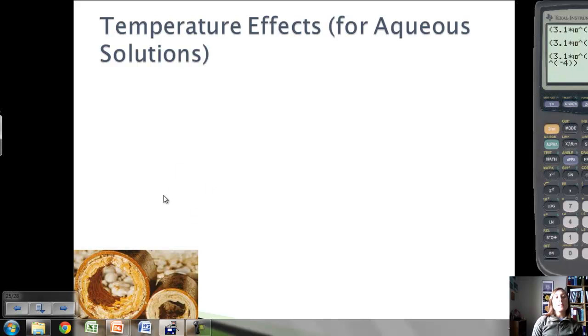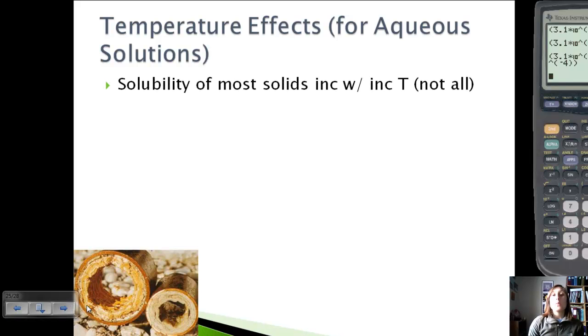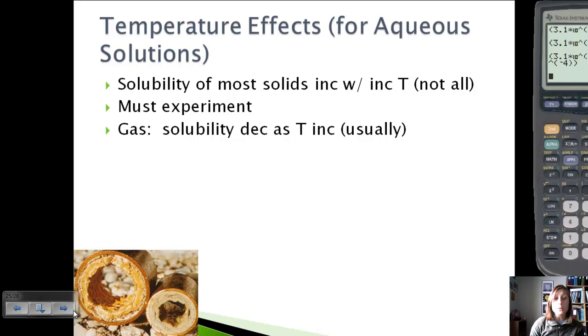Okay, so the last type of effect that's going to affect solubility besides structure and pressure is temperature. With solids, most of the time, solubility will increase with an increase in temperature. But this isn't constant for all solids, and really the only way to tell for sure is to do an experiment. Gases are a little more predictable. With a gas, the solubility will decrease as temperature increases, and this is usually the case. So we kind of have the opposite effect as with pressure.